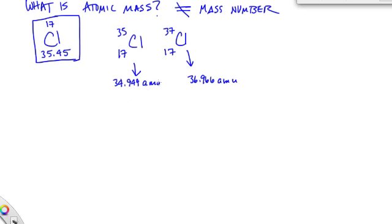So a lot of students, when they look at these and they say, well, there's two isotopes, well, you just average the two, and then your atomic mass is just the average of the two. So if we took the average of 34.949 and 36.966, so in other words, we're adding these both up and we're dividing by two.